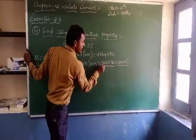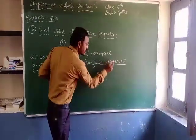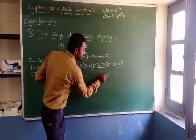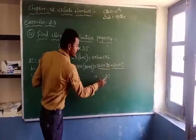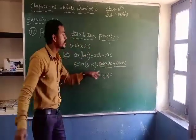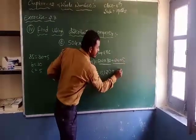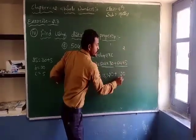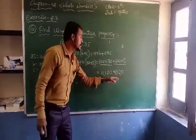So the product of these two numbers: 504 into 30 is 15,120. And here also, 5 fours are 20, carry 2. 5 zeros are 0 plus 2 is 2. 5 fives are 25. So the sum of these two numbers: